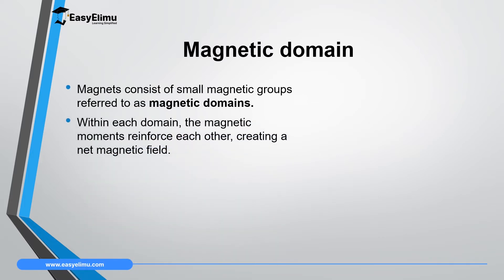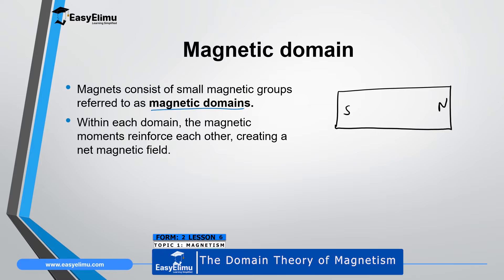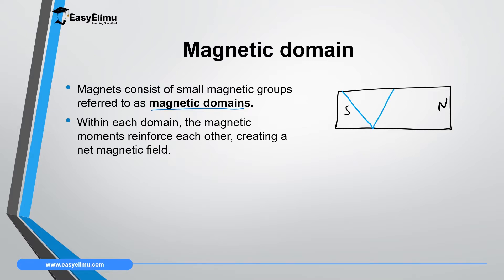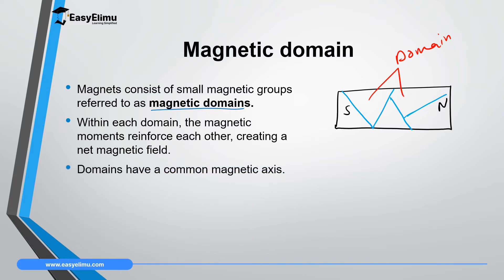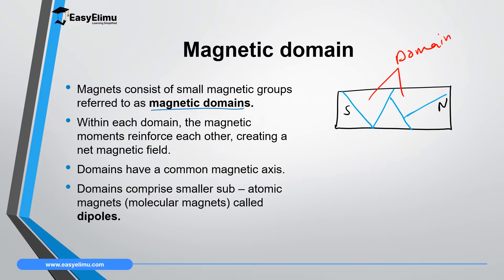According to domain theory, magnets consist of smaller magnetic groups which we call magnetic domains. In each magnetic domain we have magnetic moments which reinforce each other, creating a net magnetic field. Inside a magnet with a north pole and a south pole, we have these smaller domains. The domains have a common axis, and in each domain we have smaller atomic magnets. For example, in this diagram we can see domain one, domain two, domain three, domain four, and domain five.